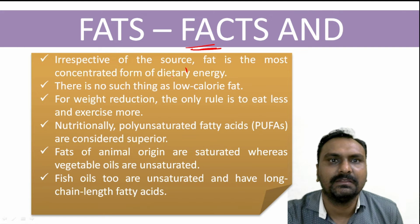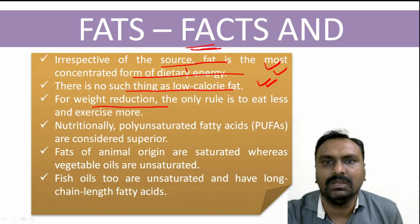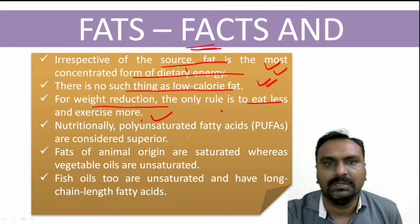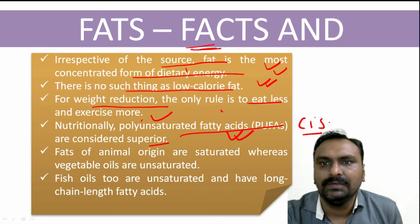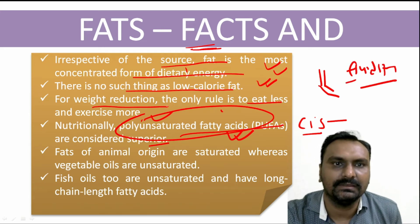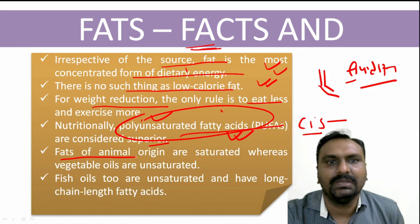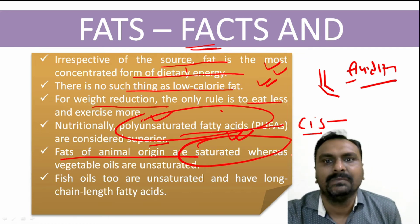Some facts about fatty acids: irrespective of the source, fat is the most concentrated form of dietary energy. There is no such thing as low-caloric fat. If a person wishes to reduce weight, the only rule is to eat less and exercise more. Polyunsaturated fatty acids are more superior because they are cis in nature and are good for the fluidity of the cell membrane. Fats of animal origin, like palmitic acid and stearic acid, are saturated, while vegetable oils are unsaturated. The only example where animal origin can be unsaturated is fish oil.